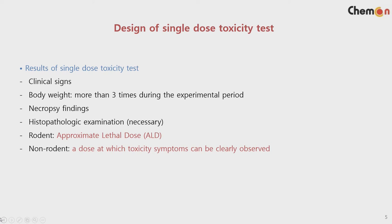For the single dose toxicity test design, test items include clinical signs, body weight, and necropsy findings. When necessary, if there are unusual findings from the necropsy or we want to understand histopathological examination, we can include that too. For rodent, the ALD is calculated. About ten years ago, the goal was to calculate LD50, but a revision was made. So for rodent, ALD is now calculated, considering animal welfare to reduce the number of animals dying from testing.